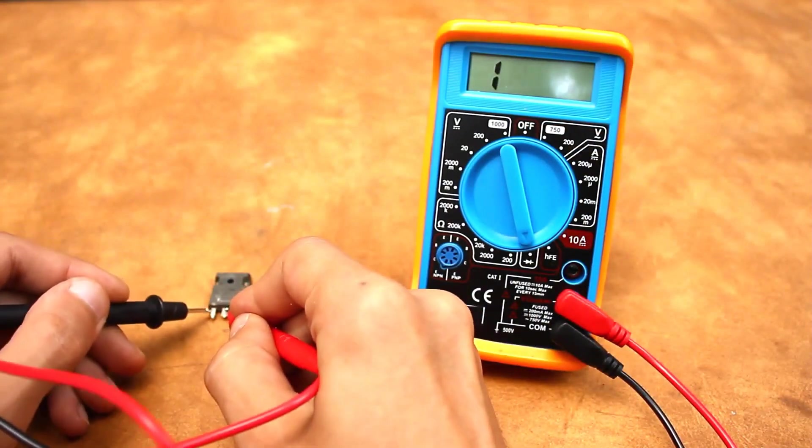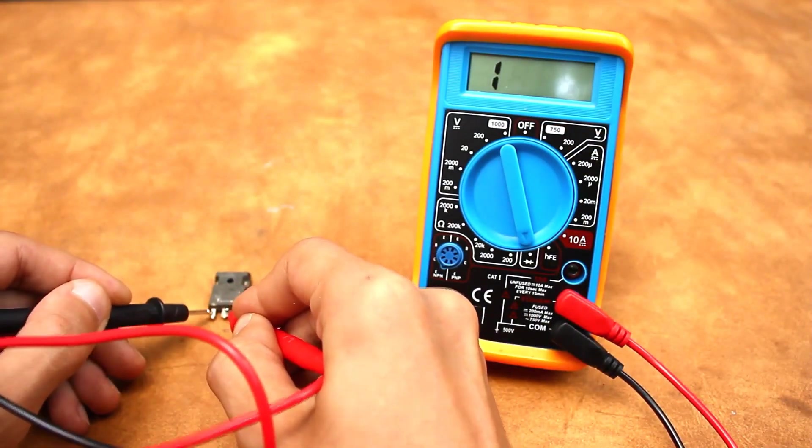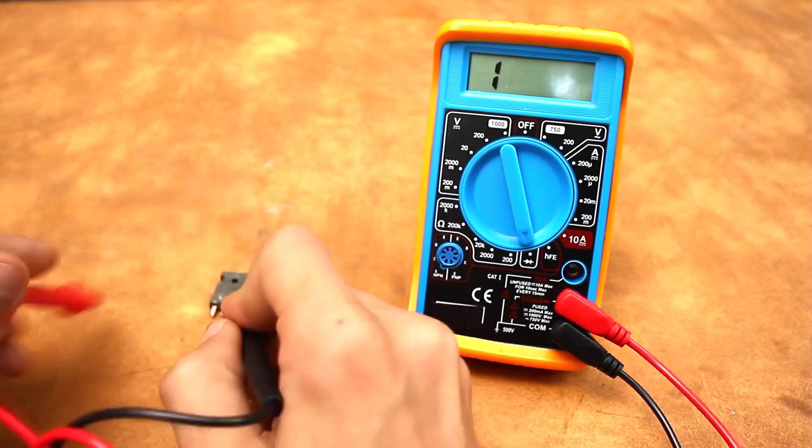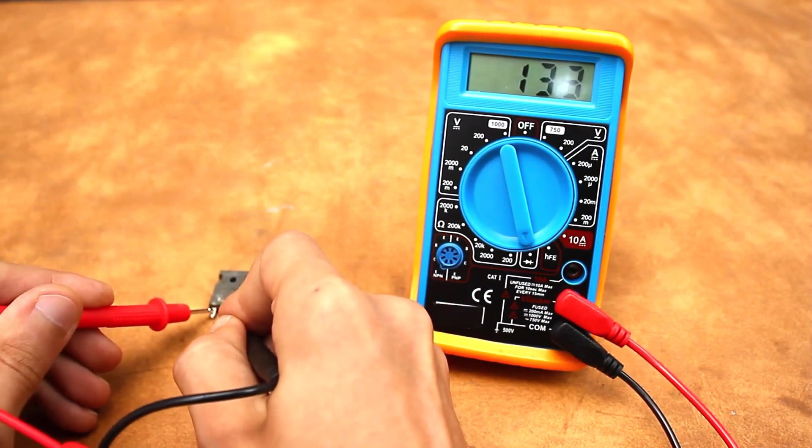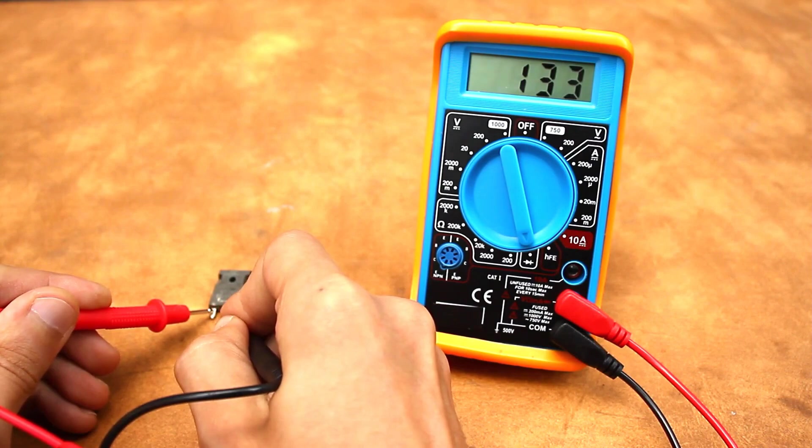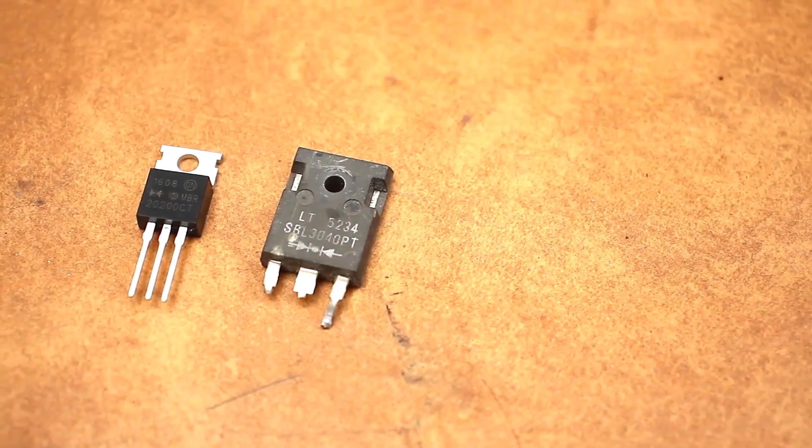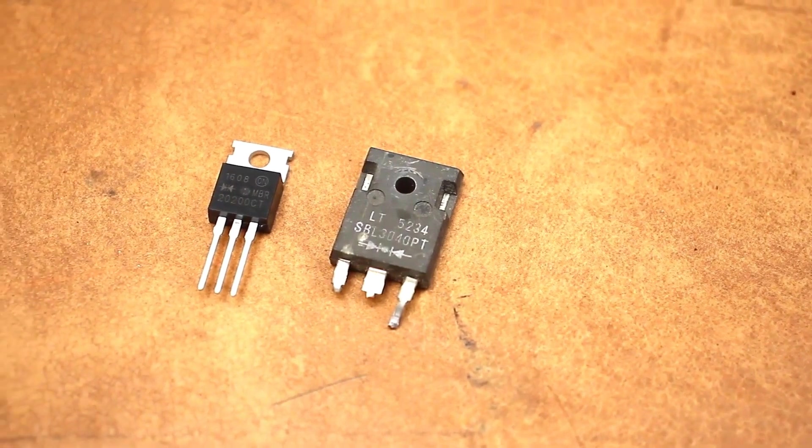However, if in one direction there is nothing on the multimeter display, and in the other direction the voltage drop is very small, for example 0.1 to 0.2V, you have encountered a Schottky diode. Such a drop is normal for them.